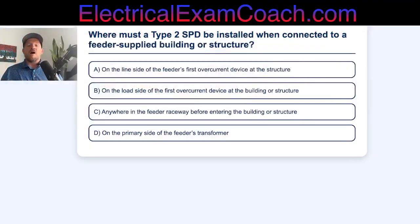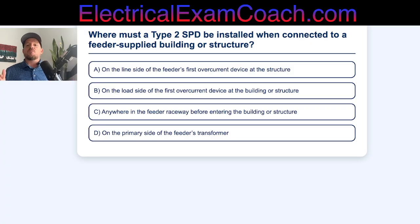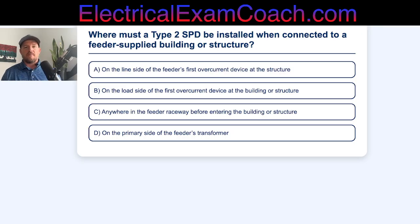Of the following options, where must a Type 2 SPD — which is a Surge Protective Device — be installed when connected to a feeder-supplied building or structure?